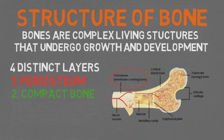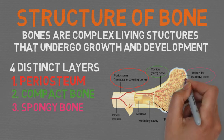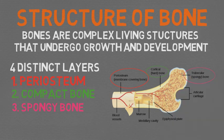Third is spongy bone, which lies beneath the compact bone. It is a very porous type of bone that is highly vascularized and contains red bone marrow. Spongy bone is usually located at the ends of long bones, with the harder compact bone surrounding it.